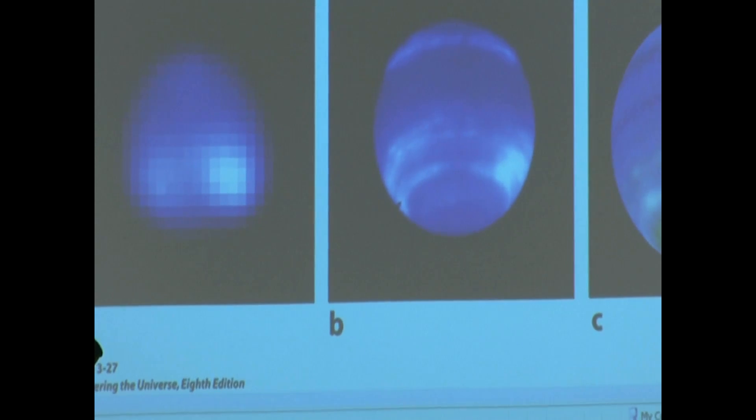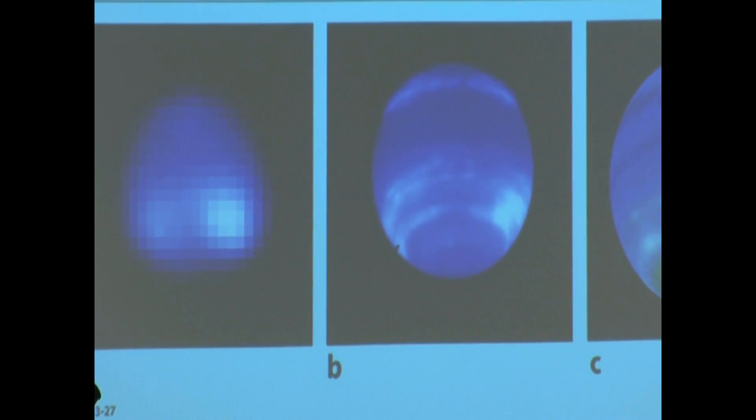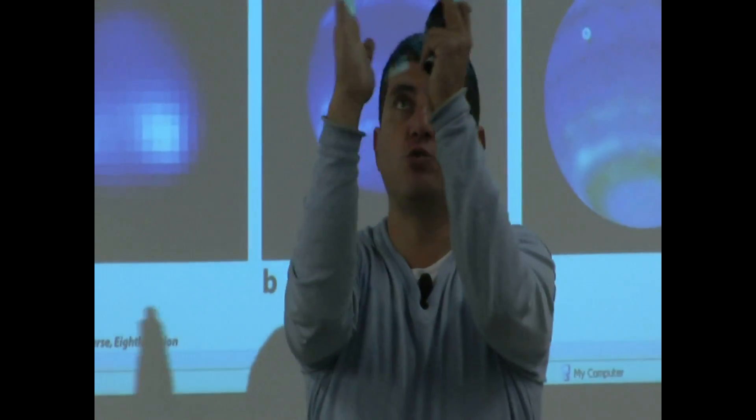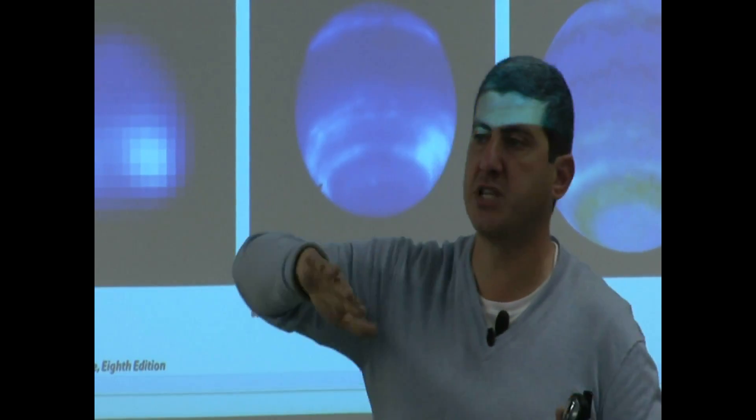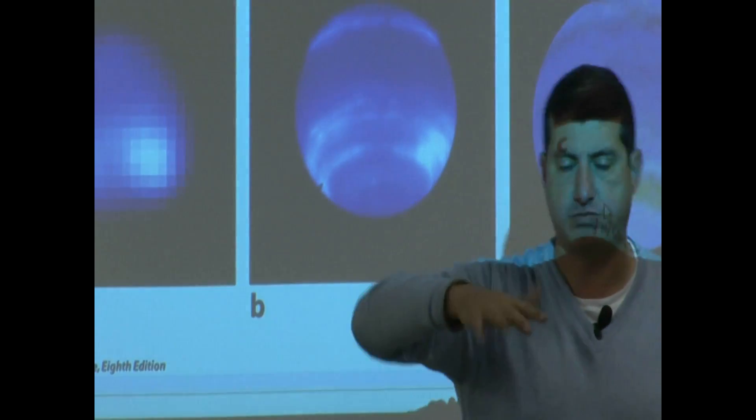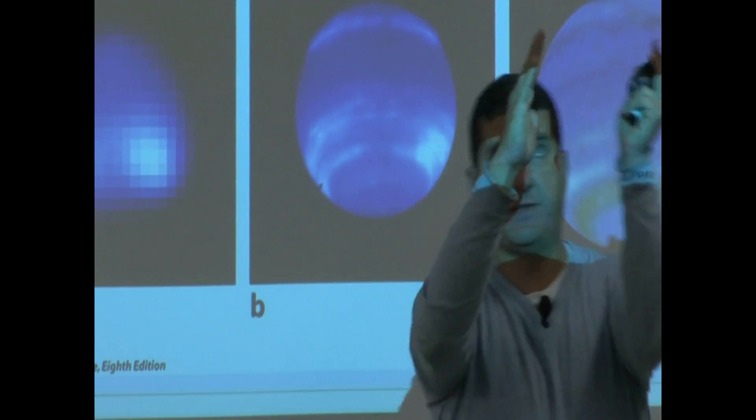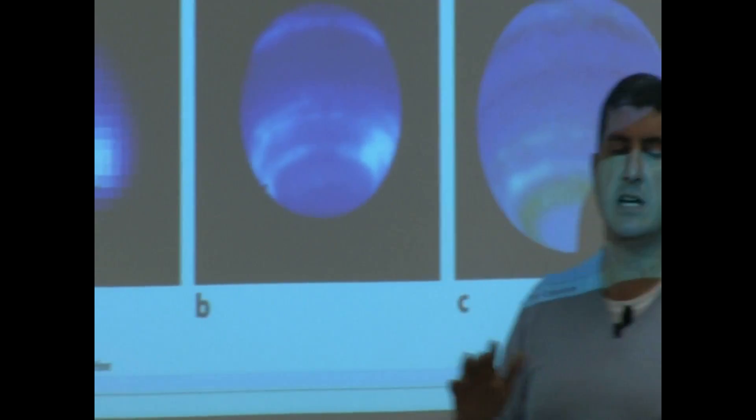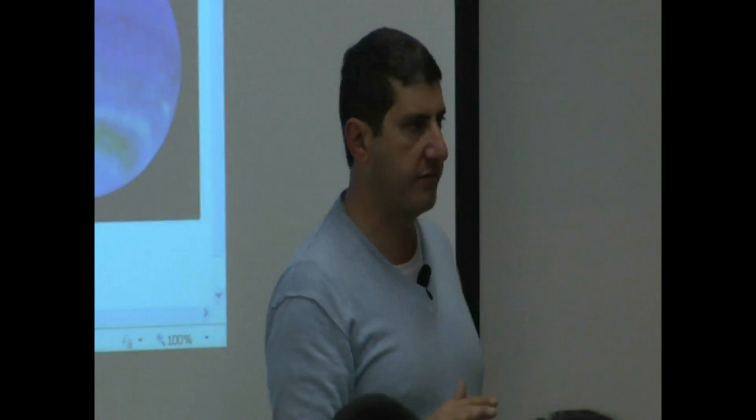So what adaptive optics technology is doing, it's very highly advanced. Every time that the wind is moving it back and forth, the adaptive optics technology is compensating for that. It's like, if it goes this way, it's compensating this way, this way, this way. And then, so basically, it cancels out the effect of the air and the wind.